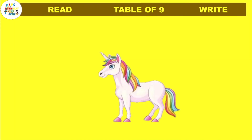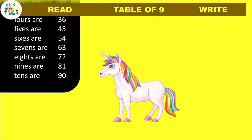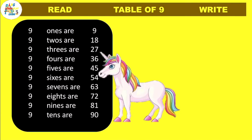Table of 9! Oh, Unicorn! Now Unicorn has come to teach us table of 9. 9 one's are 9, 9 two's are 18, 9 three's are 27, 9 four's are 36, 9 five's are 45, 9 six's are 54, 9 seven's are 63, 9 eight's are 72, 9 nine's are 81, 9 ten's are 90. Once more.